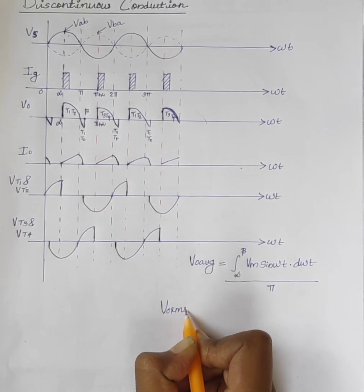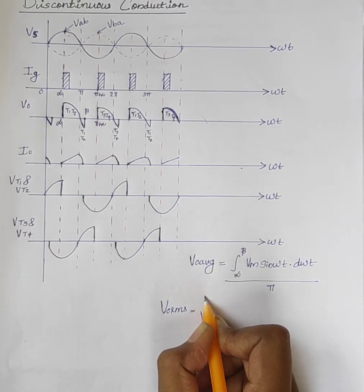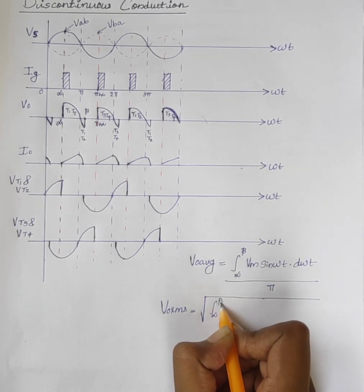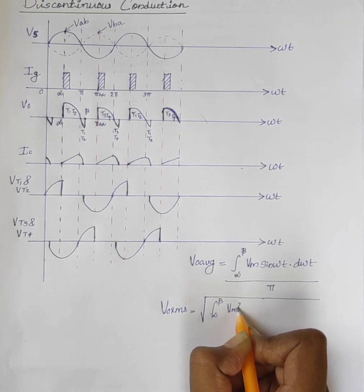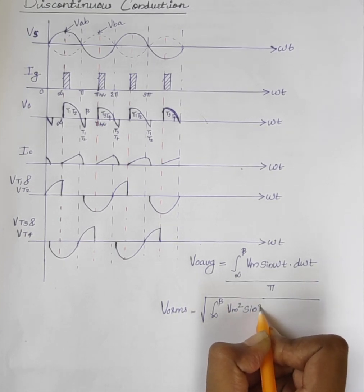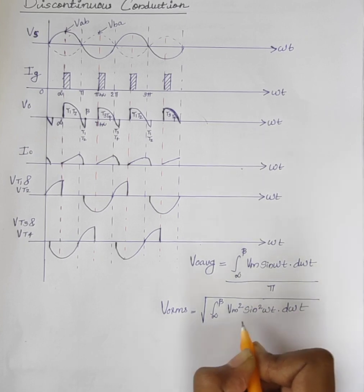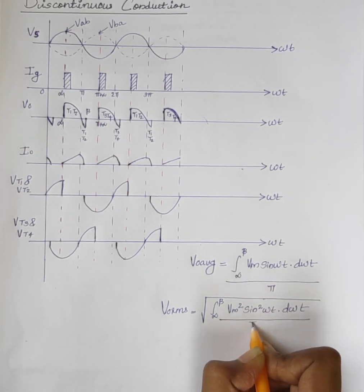V0 RMS equals root of integral alpha to beta, Vm square sin square omega t d omega t divided by pi.